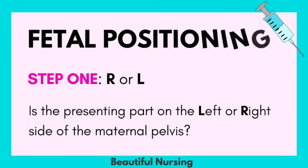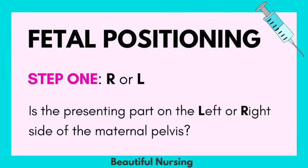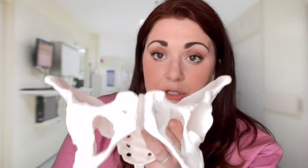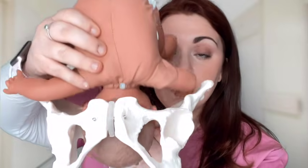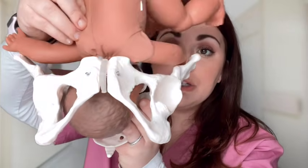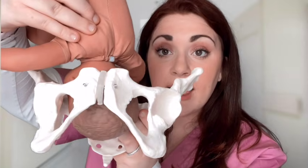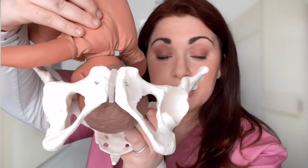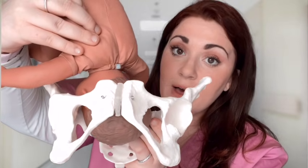Step one: the first letter is going to be an R or an L. You're asking yourself, is the presenting part on the left or right side of the maternal pelvis? Here's the maternal pelvis. Let's say the baby is going head first — so occiput. Is the baby going to be turned to the right or left side of the maternal pelvis, R or L?